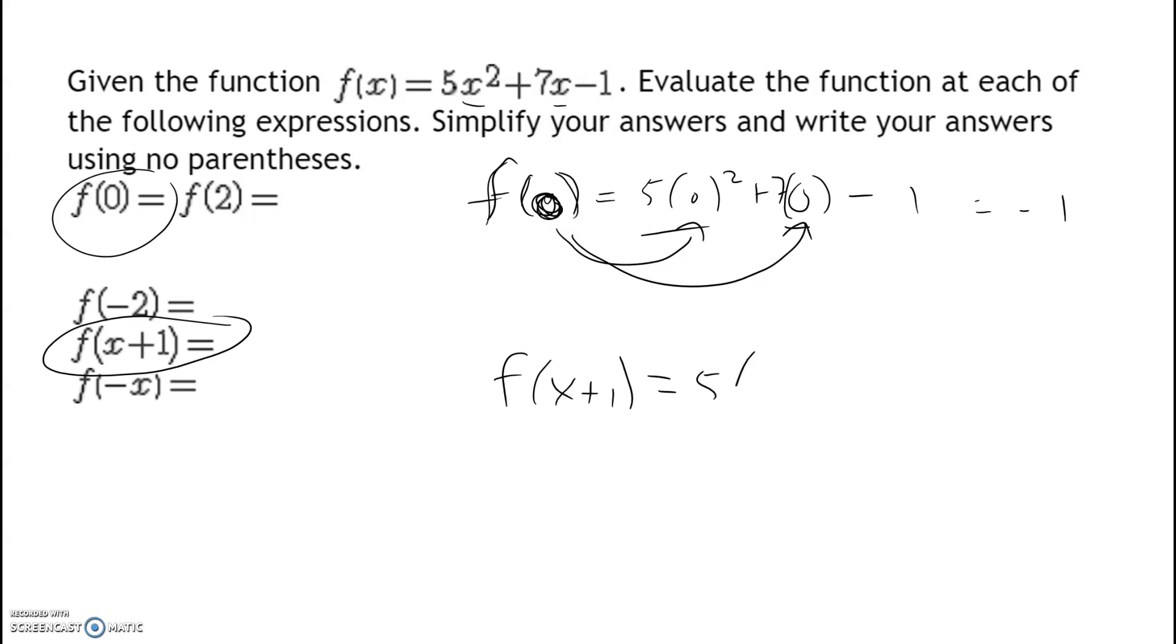So I'm going to do the same thing. Every time I have an X in my function, I'm going to plug in X plus one because that's what it's telling me to do. So plus seven X, which is now seven (X+1) minus one. Okay, so that's it. That is f(X+1).